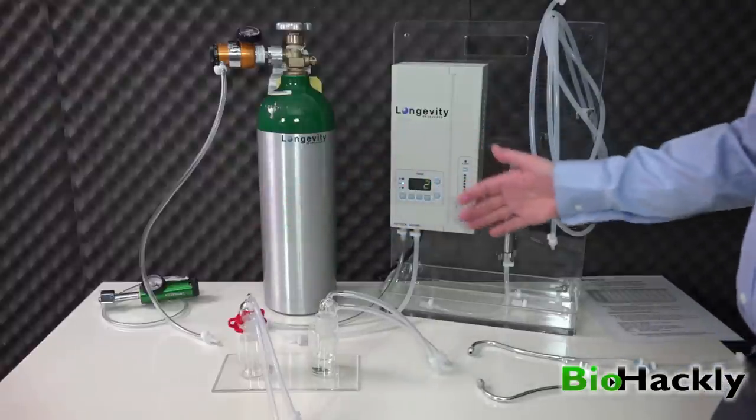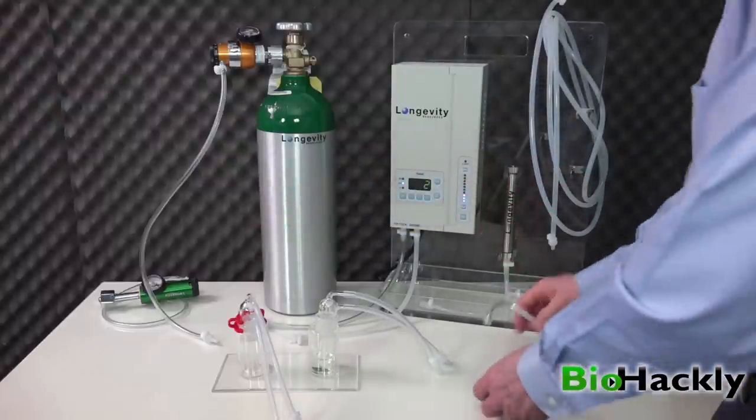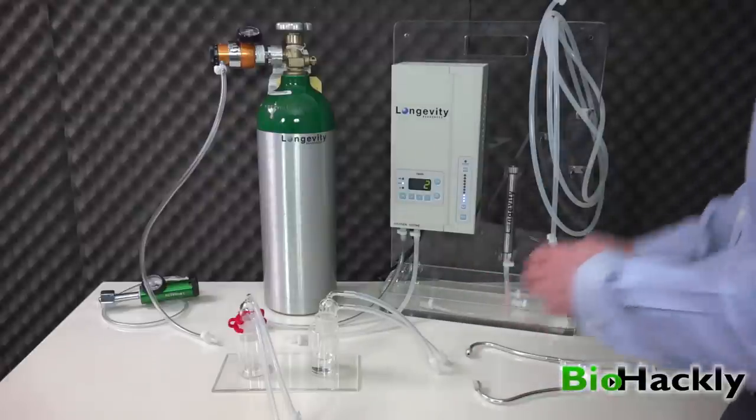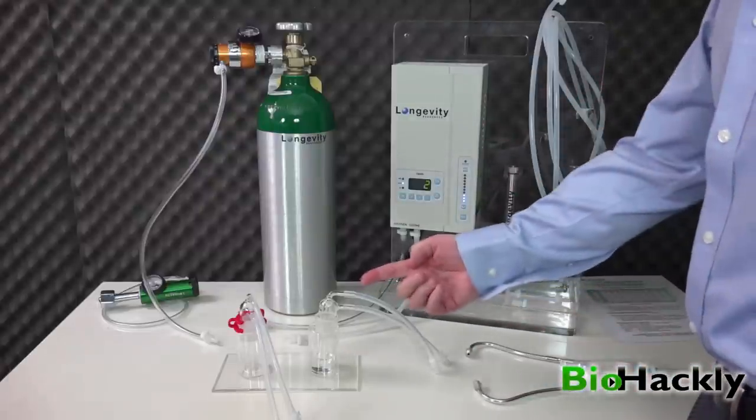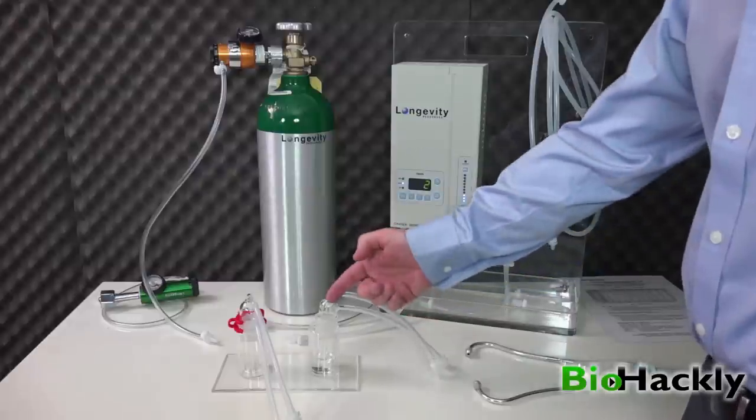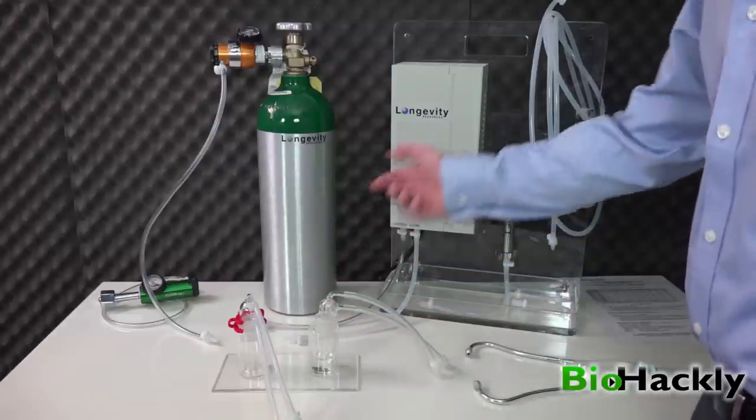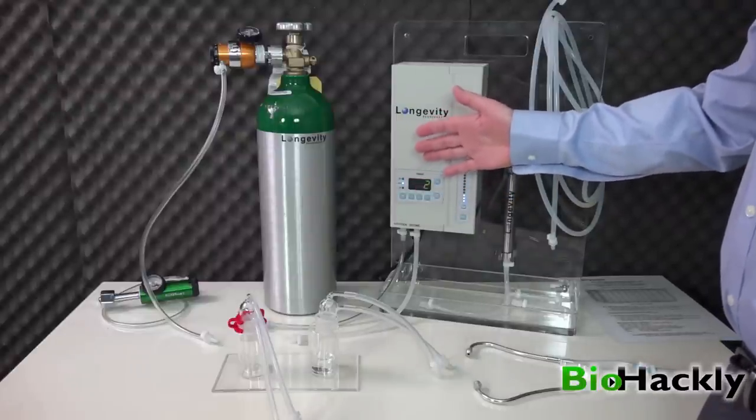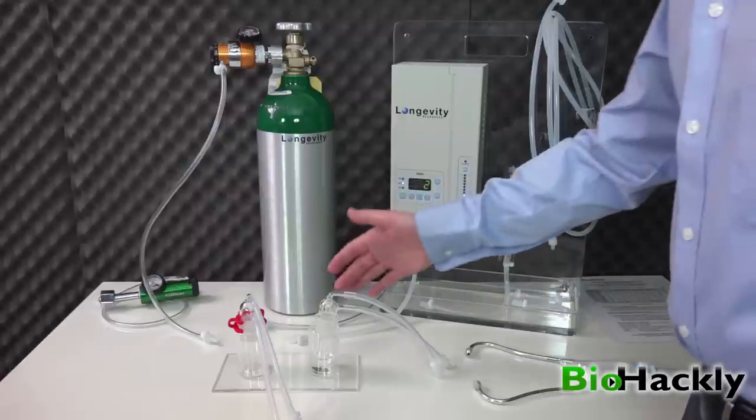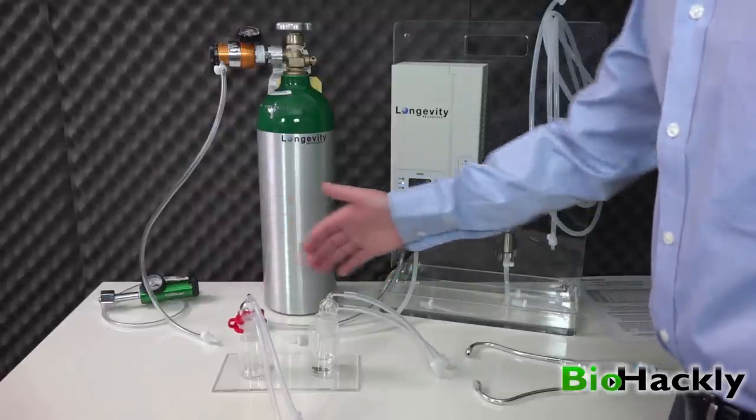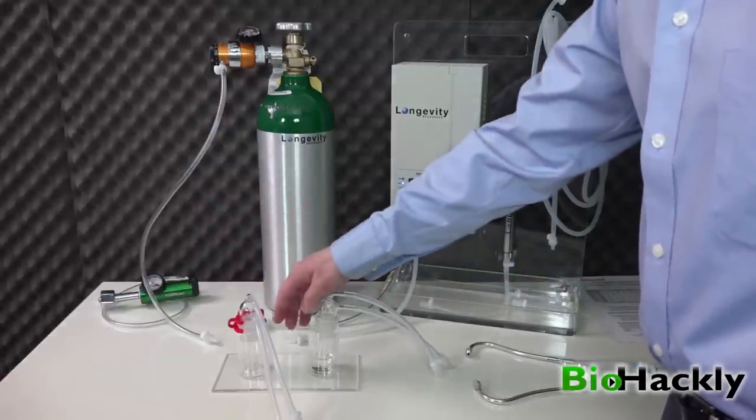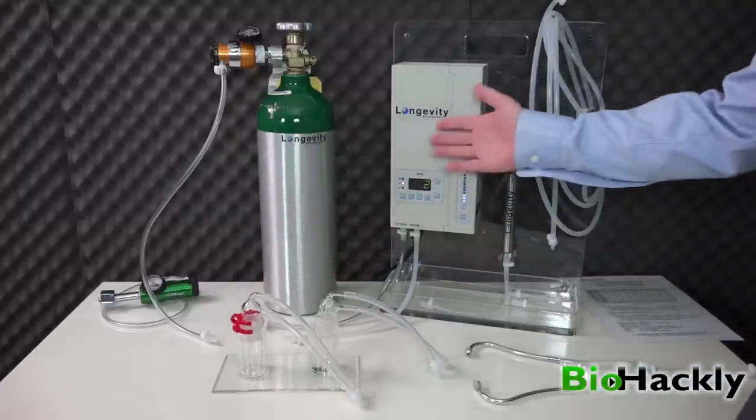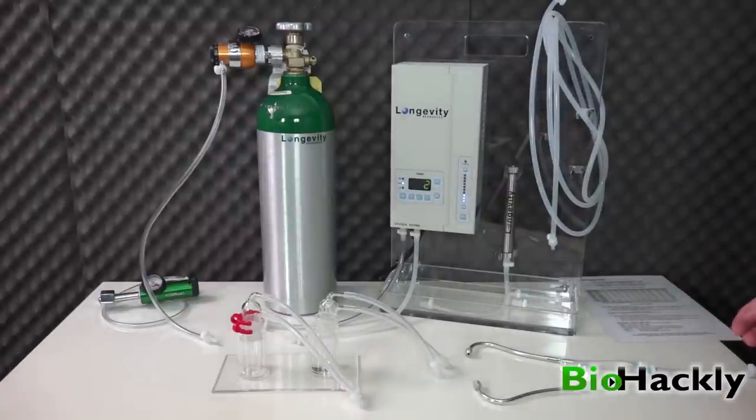The reason we have the trap or glass check valve is if you had any back pressure—for example, if I put my fingers over the end and didn't allow ozone to get out—it would turn around and go backwards, potentially pushing moisture back into the machine. The last thing you want is back pressure or moisture in your machine. The trap prevents any moisture from going back and dripping into your machine.